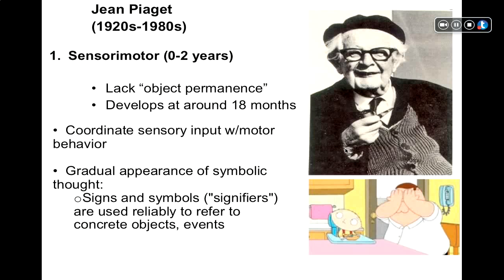One of the things that's also happening during the sensorimotor stage is the gradual appearance of symbolic thought. Kids one to two years of age show huge development of language. Signs and symbols — utterances like 'dada' and 'mama' — are reliably used to refer to concrete objects and events. Kids are beginning to connect abstract things like an utterance with an actual tangible object out there. That's symbolic thought.